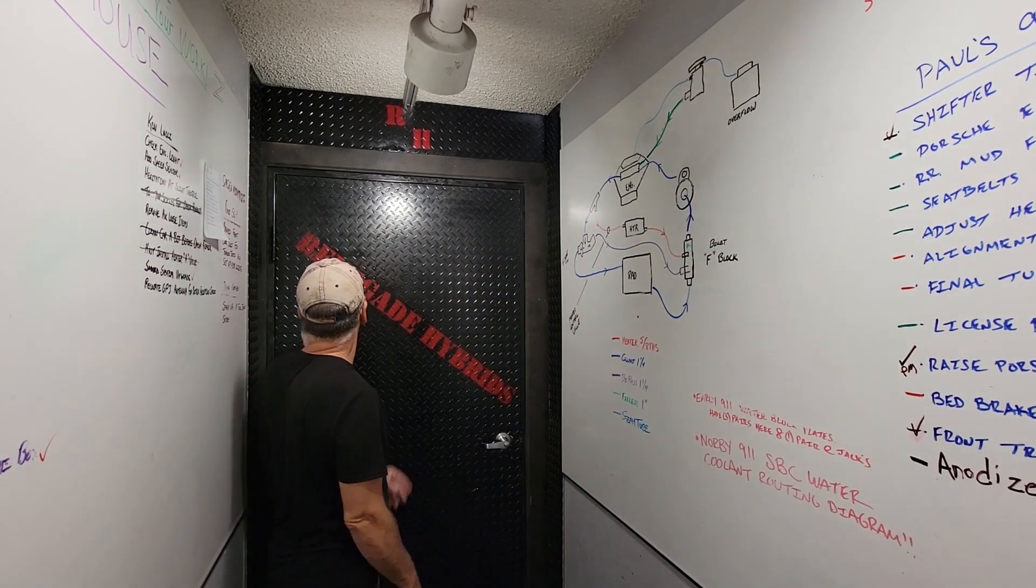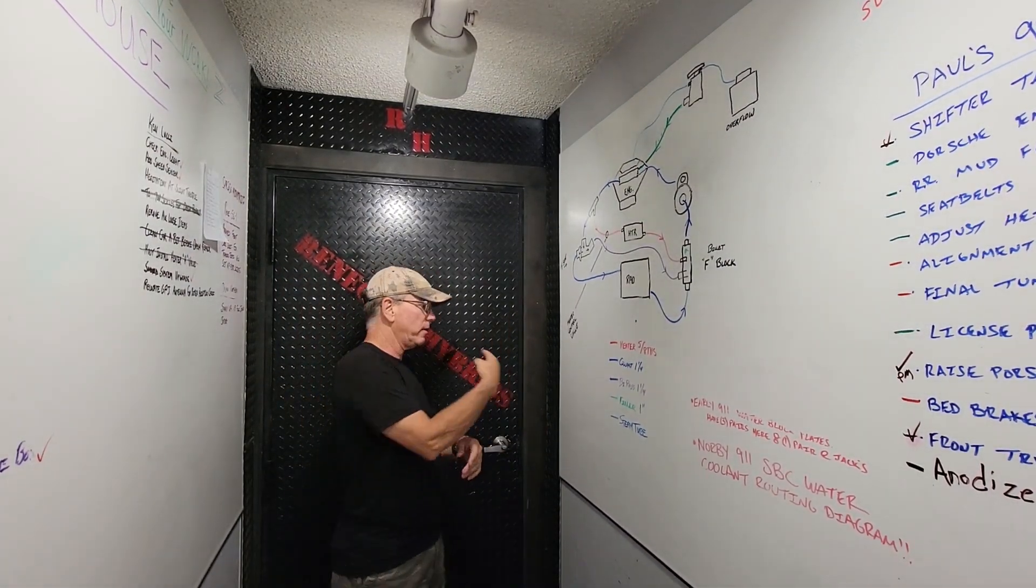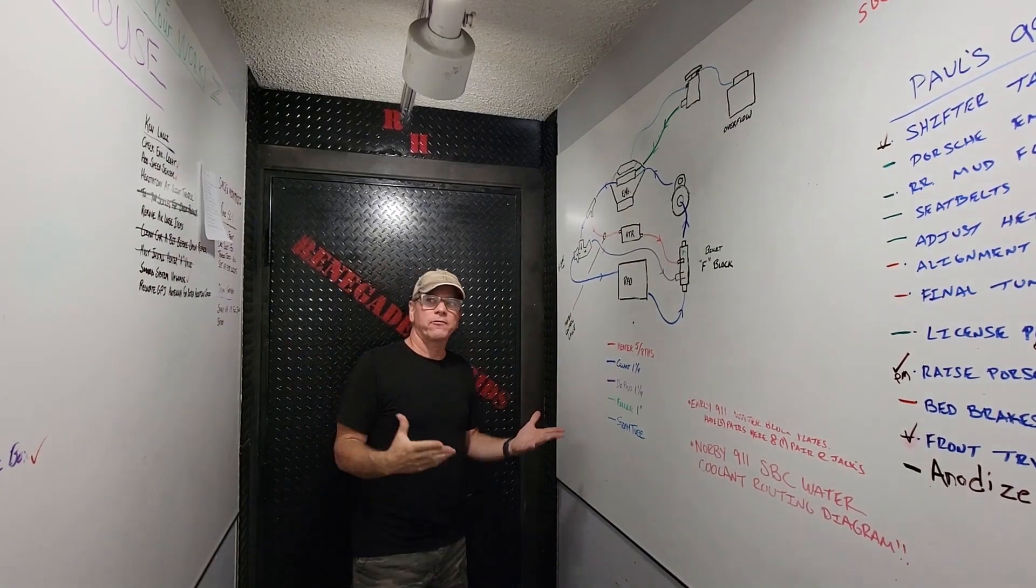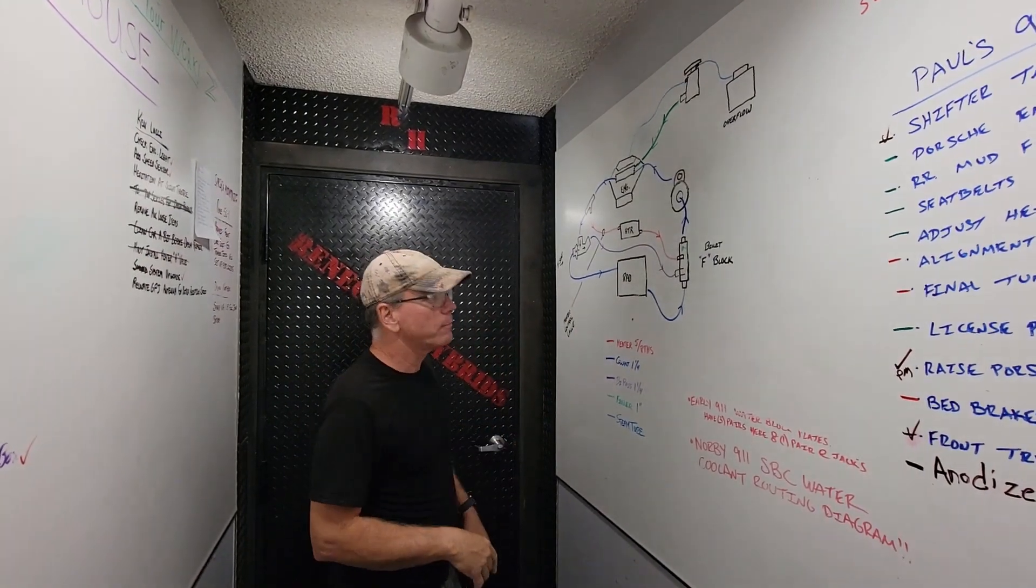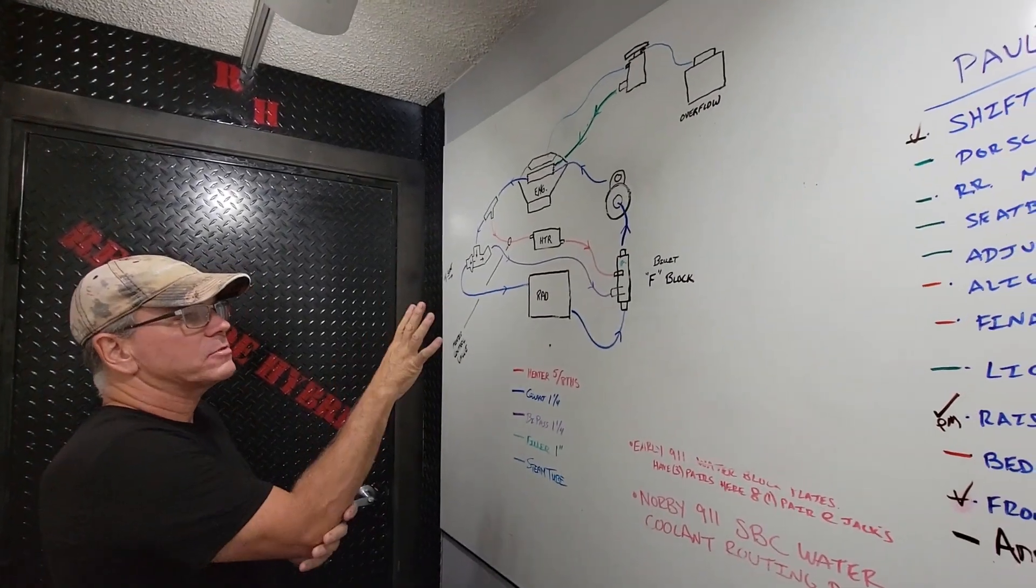Hey, it's Scott with Renegade Hybrids. We're in our little hallway that's between the shop and the main office. It's kind of a place where we have dry erase boards, lots of notes, all that sort of stuff. But we actually explore lots of engineering ideas and finalize some stuff here too.